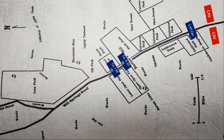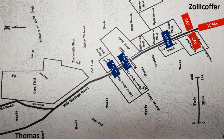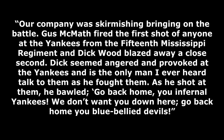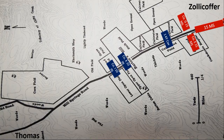Zollicoffer, urged on by the sound of gunfire, called up his regiments, the 15th Mississippi in front and the 19th Tennessee behind them. The commander of the 15th sent Company E to the west of the road and Company G to the east of the road as skirmishers, allowing the cavalry companies to fall back to safety. Private J.B. Foster of Company E remembered: "Our company was skirmishing bringing on the battle. Gus McMath fired the first shot of anyone at the Yankees from the 15th Mississippi regiment, and Dick Wood blazed away a close second. Dick seemed angered and provoked at the Yankees, and is the only man I ever heard talk to them as he fought them. As he shot at them, he bawled, 'Go back home, you infernal Yankees. We don't want you down here. Go back home, you blue-bellied devils.'" Another member of the 15th Mississippi explained that the skirmishers were advancing like zouaves by lying down flat and firing, wheeling on their backs and loading again, rising and running forward about 10 steps and again dropping and firing.